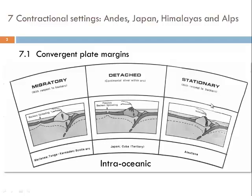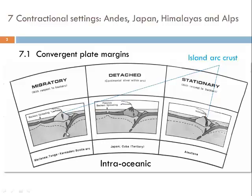Here we see a series of sketches that illustrate intra-oceanic convergence, where oceanic lithosphere is subducted underneath other oceanic lithosphere. Two oceanic plates are in a convergent situation and one of them is getting subducted. This oceanic island arc is formed by the magmatic activity triggered by subduction of oceanic lithosphere. This is juvenile crust that forms by the differentiation of mantle magmas that contribute to the growth of crust.